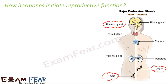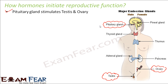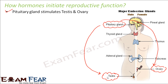All other glands are present in both male and female. How exactly do hormones initiate reproductive function? That means how they initiate the production of sperms and eggs, and also the appearance of secondary sexual characters. The first role is played by the master gland, the pituitary gland, which stimulates the testis and the ovary. This is why hormones are called chemical messengers — they transfer messages from one part to another.